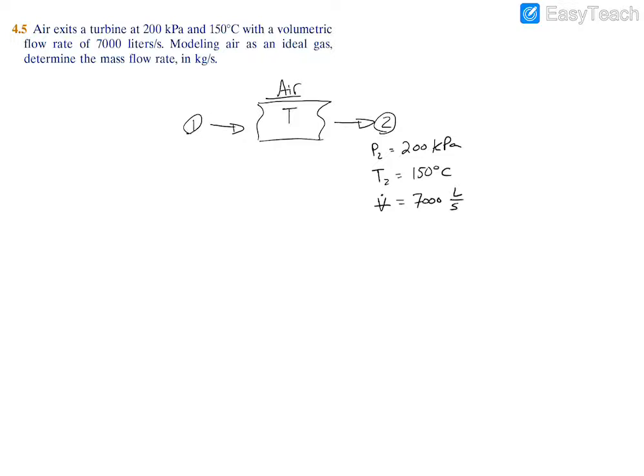We're told that we can use the ideal gas model. The ideal gas model, if you don't recall, is PV equals MRT. Here we're working with rates, so we're looking for the mass flow rate in kilograms per second.